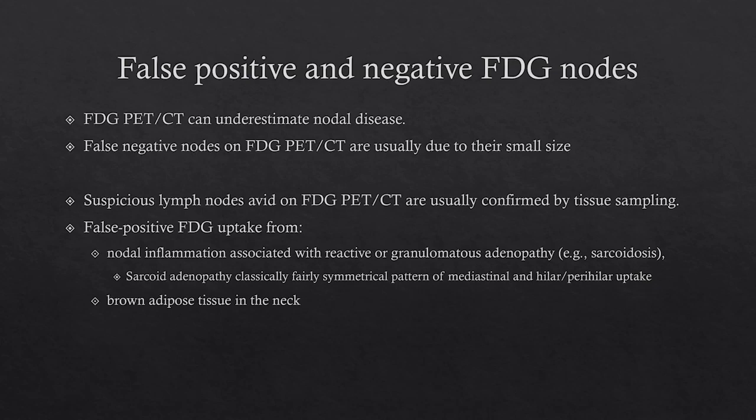False uptake can be seen because FDG is rather nonspecific — for example, with reactive changes, granulomatous adenopathy, or sarcoidosis. The history or pattern of distribution can help; sarcoidosis typically has a symmetrical pattern of distribution in the hilum at a certain stage. You can also get false positive FDG uptake from brown fat, but looking at the CT images can help with that.